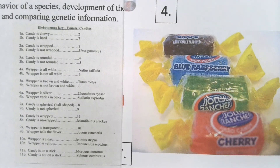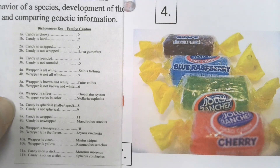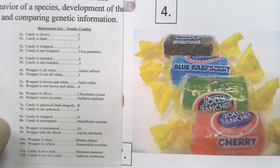Here's another one. Is the candy chewy or hard? This time it's hard, so we skip all the way down to number 7 — meaning steps 2 through 6 are completely irrelevant. For number 7, is the candy spherical or not spherical? It's not spherical, so that sends us to number 9. Is the wrapper transparent or does the wrapper tell the flavor? We can see cherry, blue raspberry, and grape, so the wrapper tells the flavor — that's Joyous Rancheria, for Jolly Rancher.